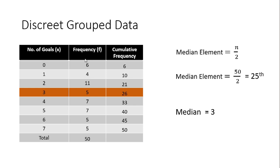Cumulative frequency is the total frequency up to that level. For example, at the first level the frequency is 6 and the cumulative frequency is also 6. At the second level, the cumulative frequency is 10: that is 6 from the previous level plus 4 from this level. The next level has 10 + 11 = 21, and so on. You add the values until you reach the total of 50.